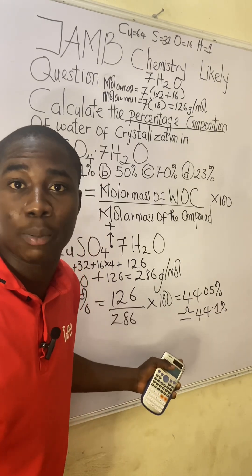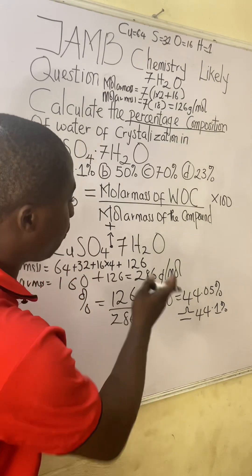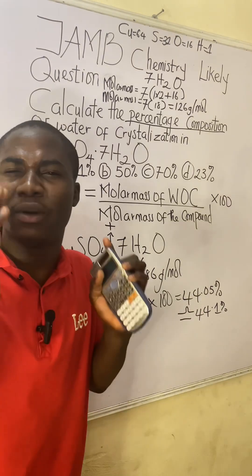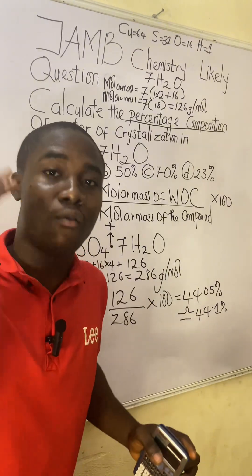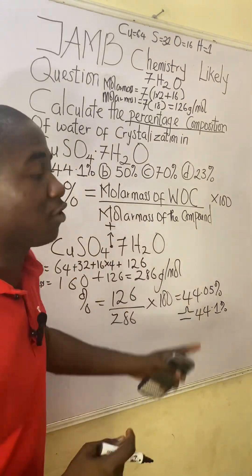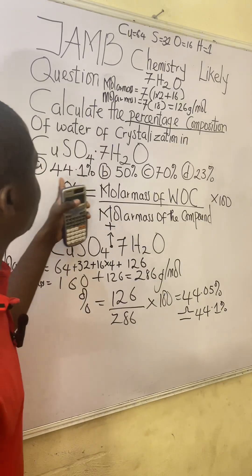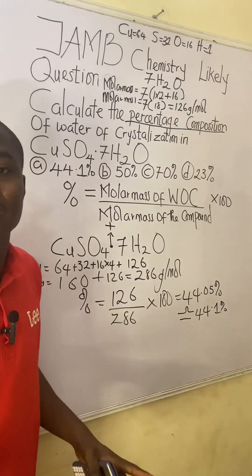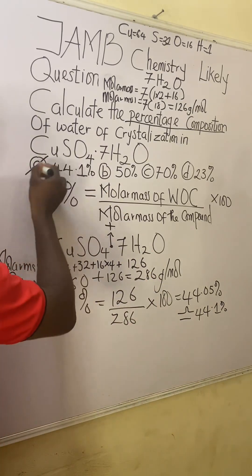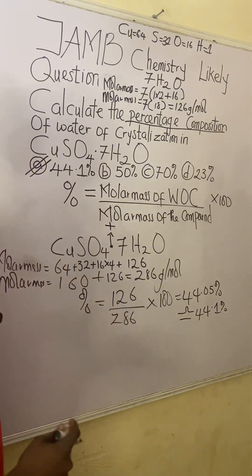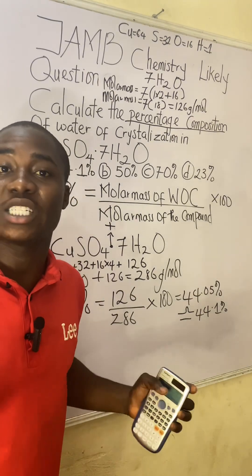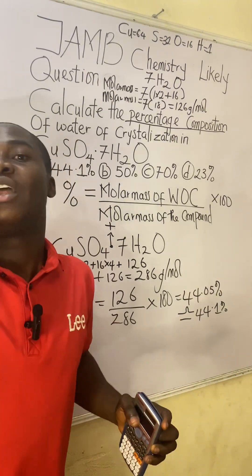We have gotten the answer for the percentage composition of water of crystallization in this compound: 44.1%. Checking the options, the answer is option A. It's actually very easy.